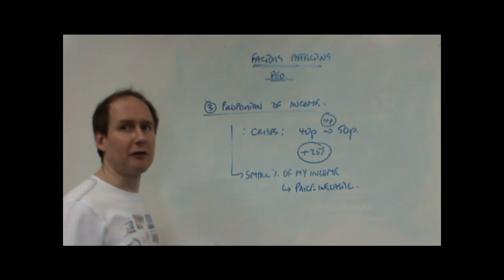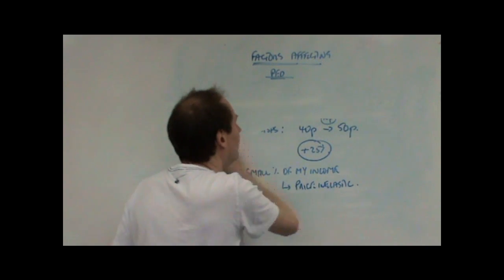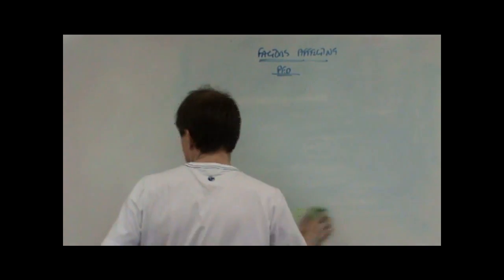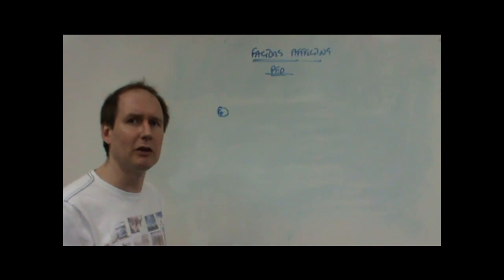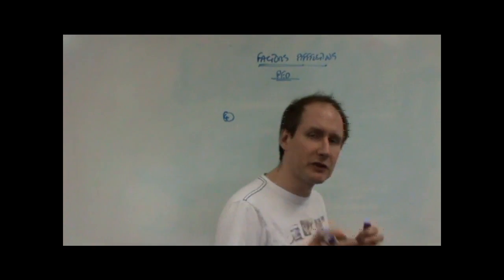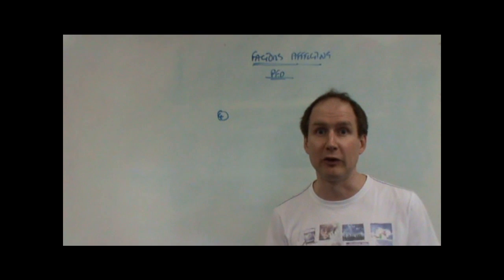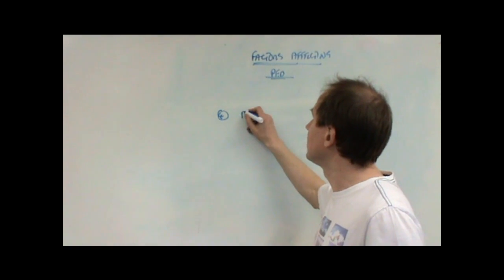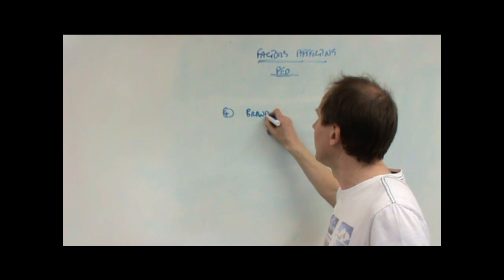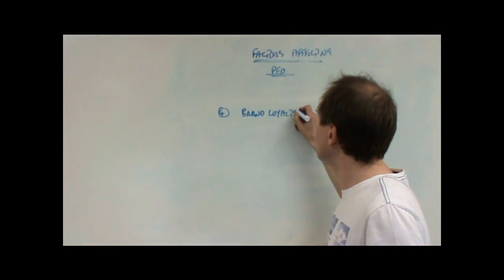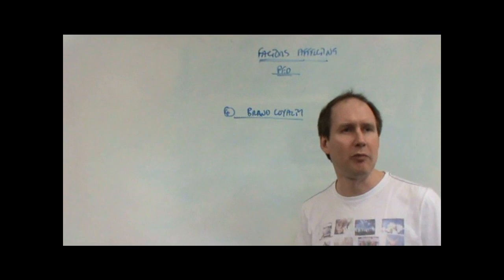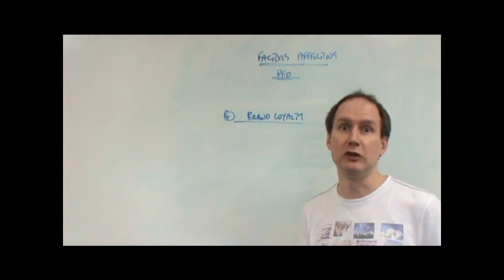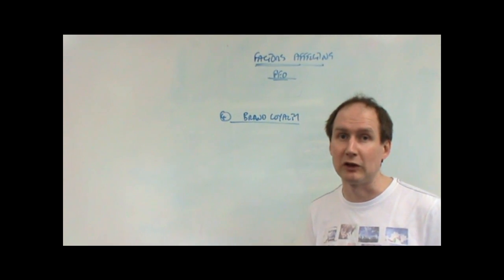Other factors that might be important—apart from the proportion of income—you might think about firms' strategies. They want to make demand price inelastic if they can. Think about brand loyalty, advertising, that type of factor. People will pay absurd prices for Gucci handbags and products of that nature. They can essentially put the price up